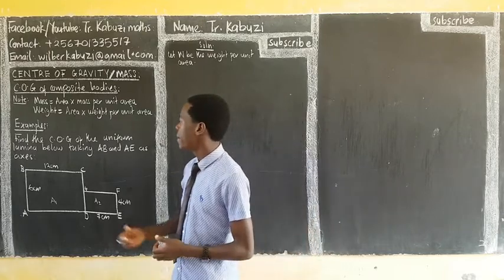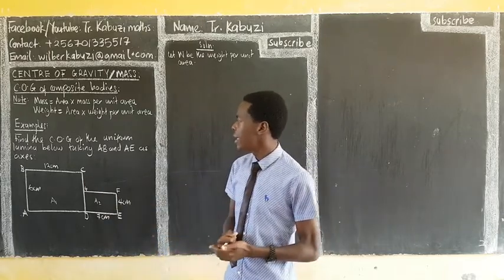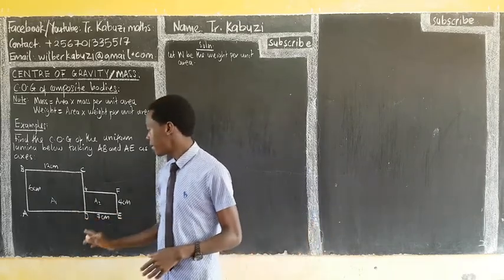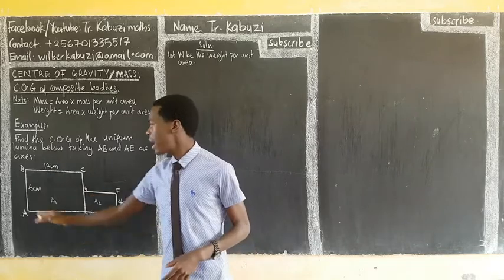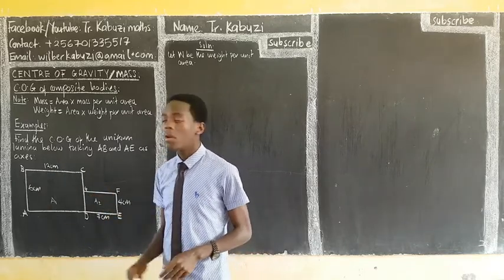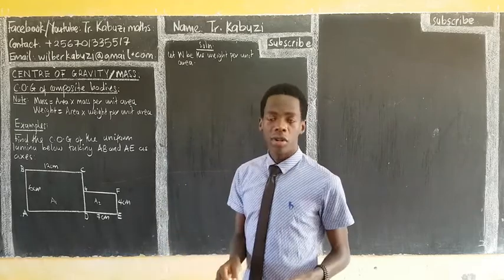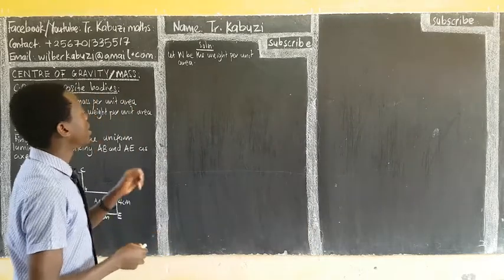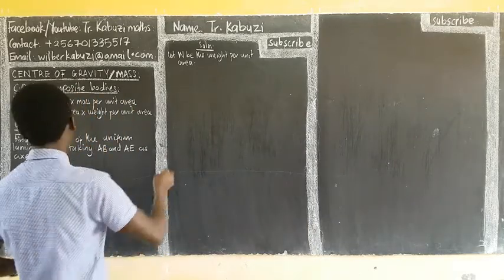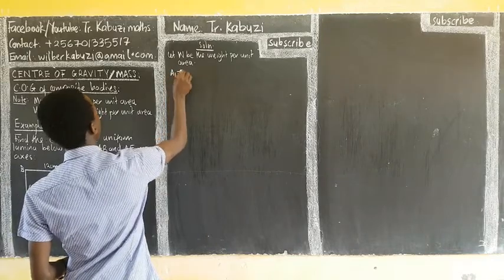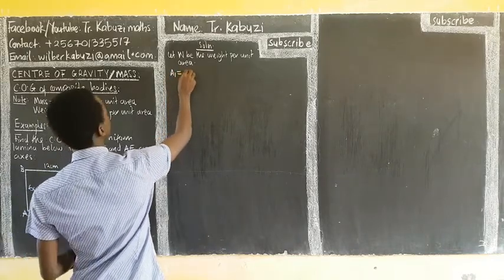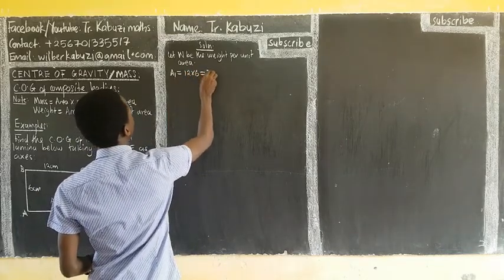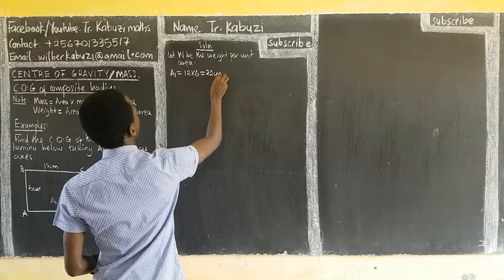Find the center of gravity of the lamina below, taking AB and AE as the axes. We can see this is section a1 and this is a2 of the lamina. We need to get the center of gravity of the whole lamina. So we get the area for the first body, a1. Since this is a rectangle, we get 4 times 6, which gives us 72 centimeters squared.